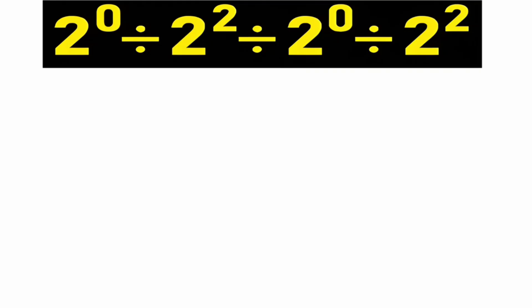The first method is 2 power 0 is equal to 1, divide 2 power 2 equal to 4, divide 2 power 0 is equal to 1, divide 2 power 2 is equal to 4.